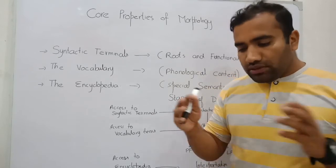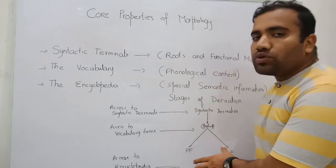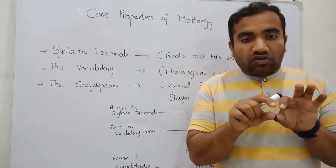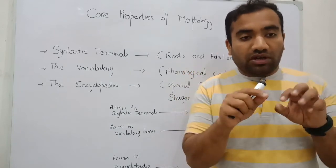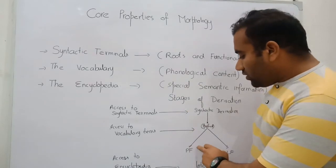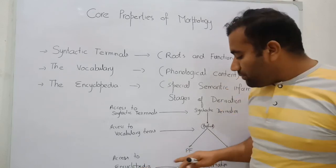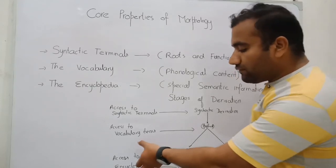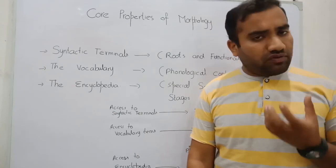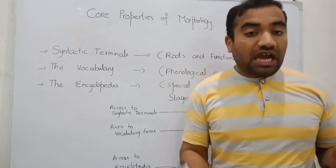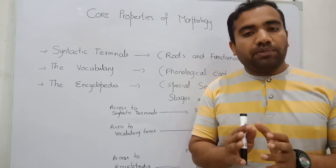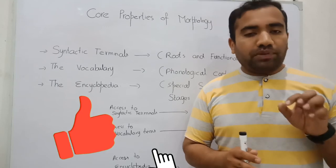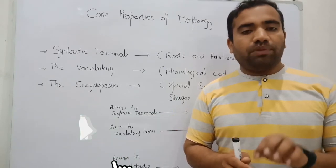The next step is that the derivation splits into two layers: one is PF (Phonological Form) and the second is LF (Logical Form). When the derivation splits, it will not be converted further at that point if spellout has already operated. At spellout, the derivation splits into PF and LF, and at both levels we access encyclopedic information — the interpretation of that particular word we have generated. This is the core of morphology. If you want to know more about language and linguistics, please keep watching, subscribe the channel, and press the bell icon. Thank you.